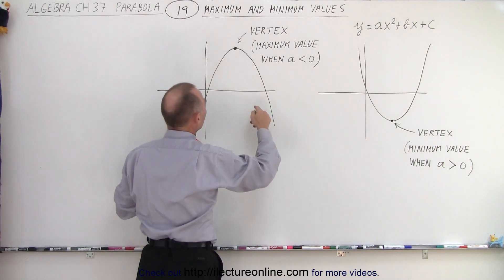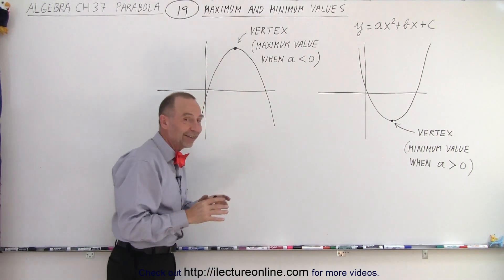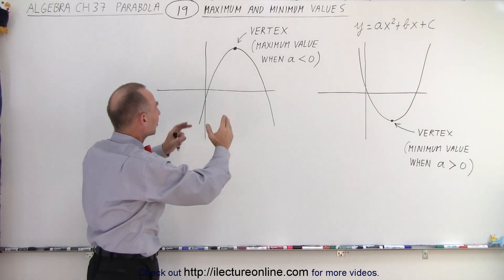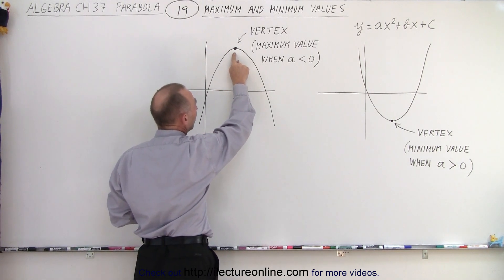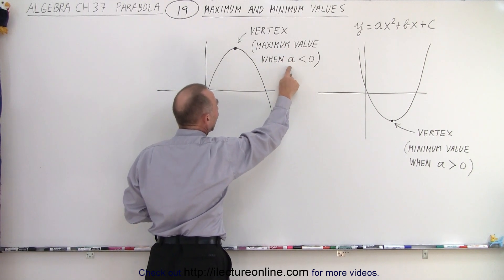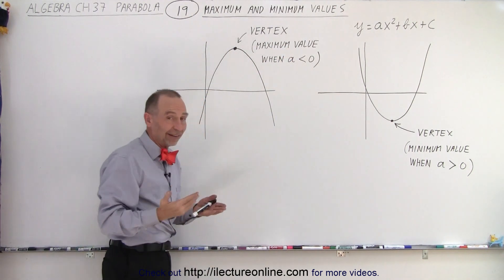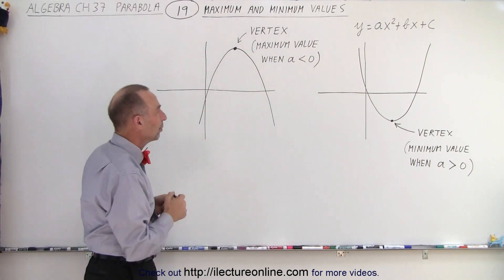If the parabola opens downward, there's a point on the graph that is the highest point of all the points on the graph. And again, that will be the vertex. And in this case, that will be the maximum value when a is less than 0. When a is less than 0, we know the parabola opens downward.